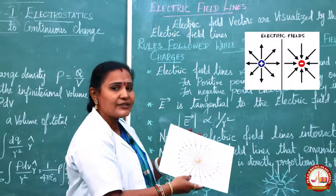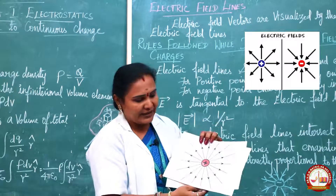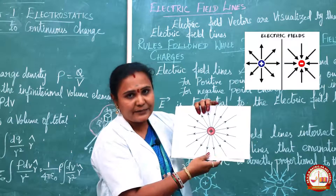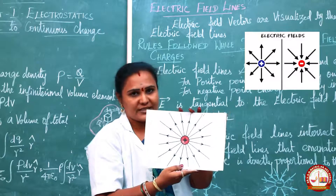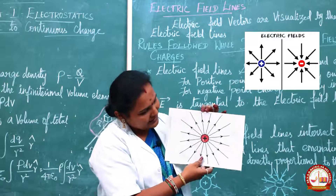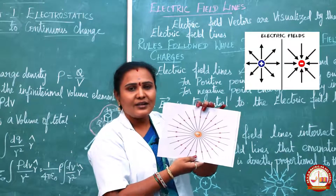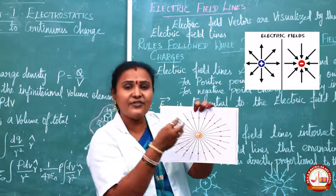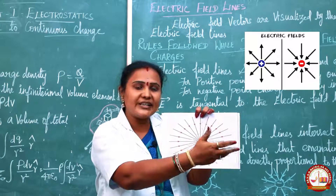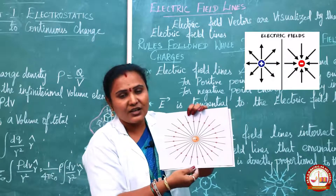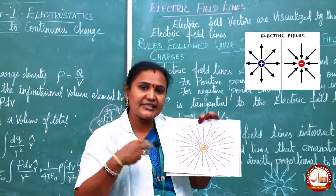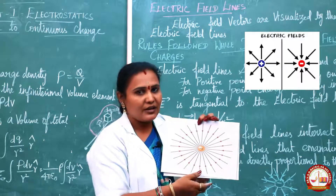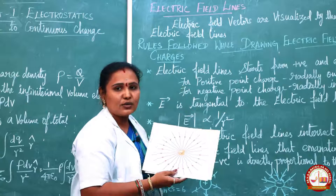For an isolated positive point charge, the field lines start from the positive charge and end at infinity. For an isolated negative point charge, the field lines start from infinity and end at the negative charge. So: positive charge means starts from positive and ends at infinity; negative charge means starts from infinity and ends at the negative charge.